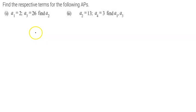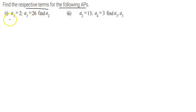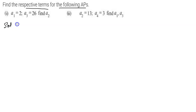Hello everyone, welcome to Vedantu. Today I am going to discuss a very important question. The question says: find the respective terms of the following AP. First question: a1 is equal to 2, a3 is equal to 26, and find a2.